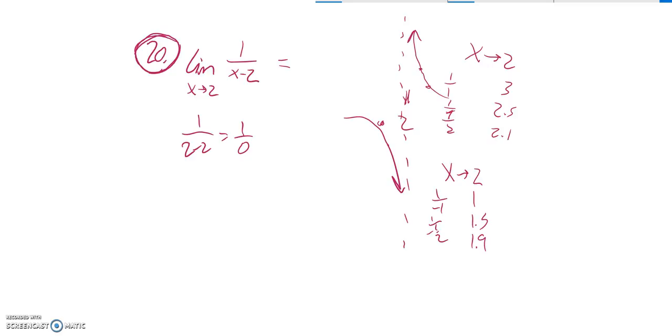So we will say it does not exist. There is no limit to this as x approaches 2. We can say DNE.